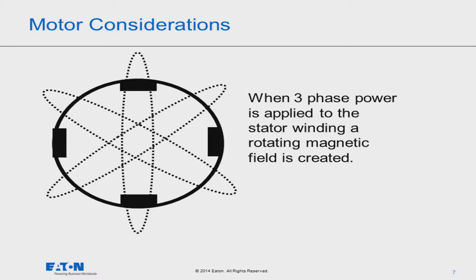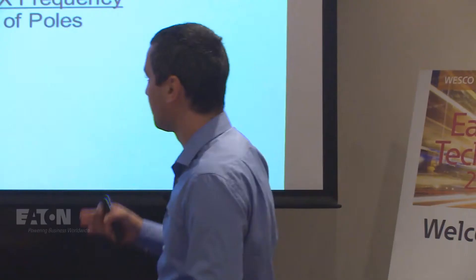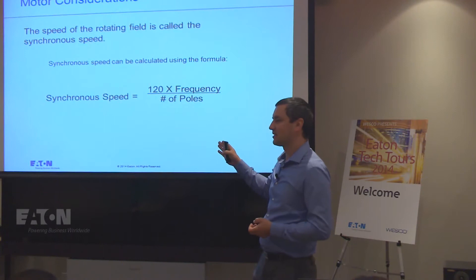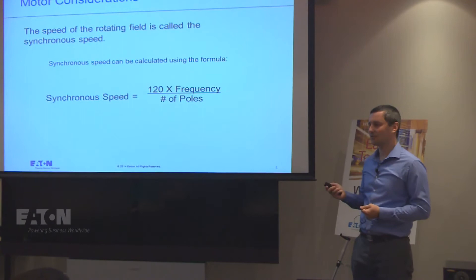The speed of the rotating field is called your synchronous speed, and we have a formula to calculate that: 120 multiplied by your frequency, divided by the number of poles. Here in North America, we're using 60 Hz. The speed is going to be influenced mostly by the number of poles. Higher number of poles means lower speed — more poles, less speed.